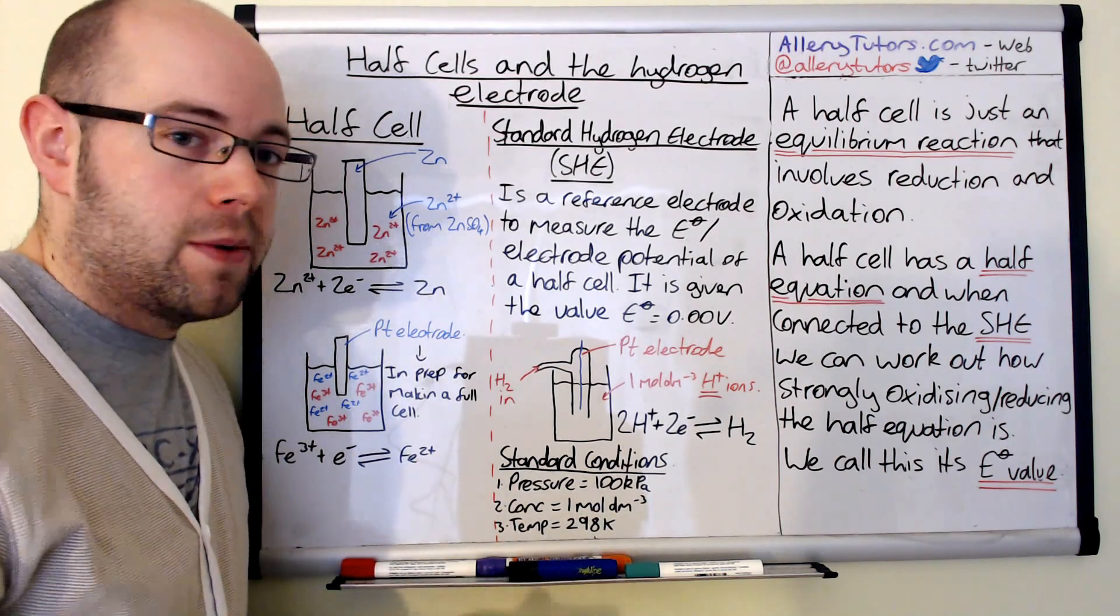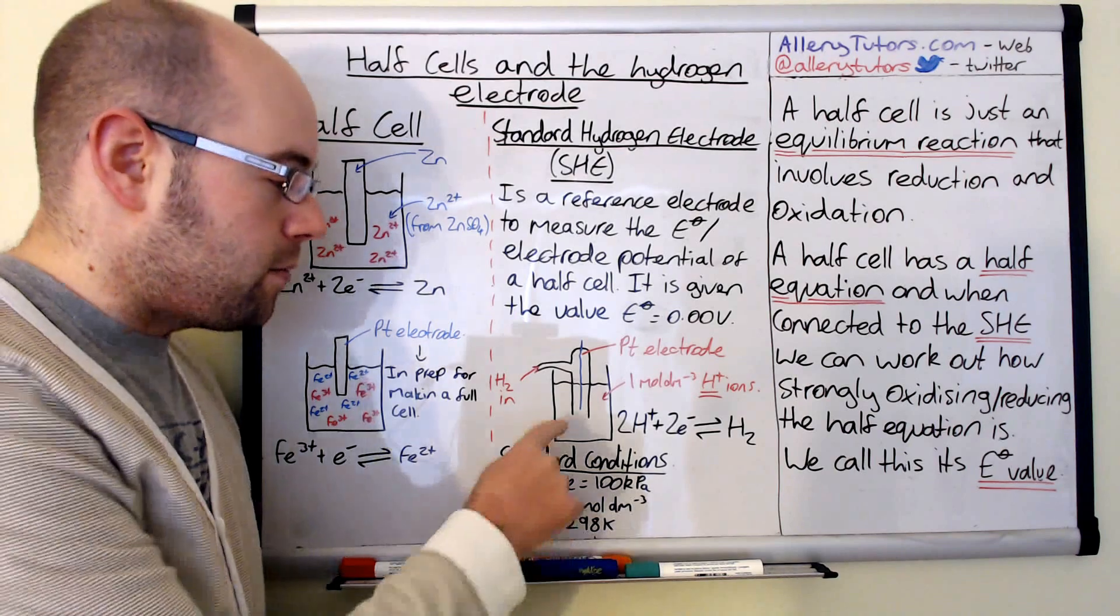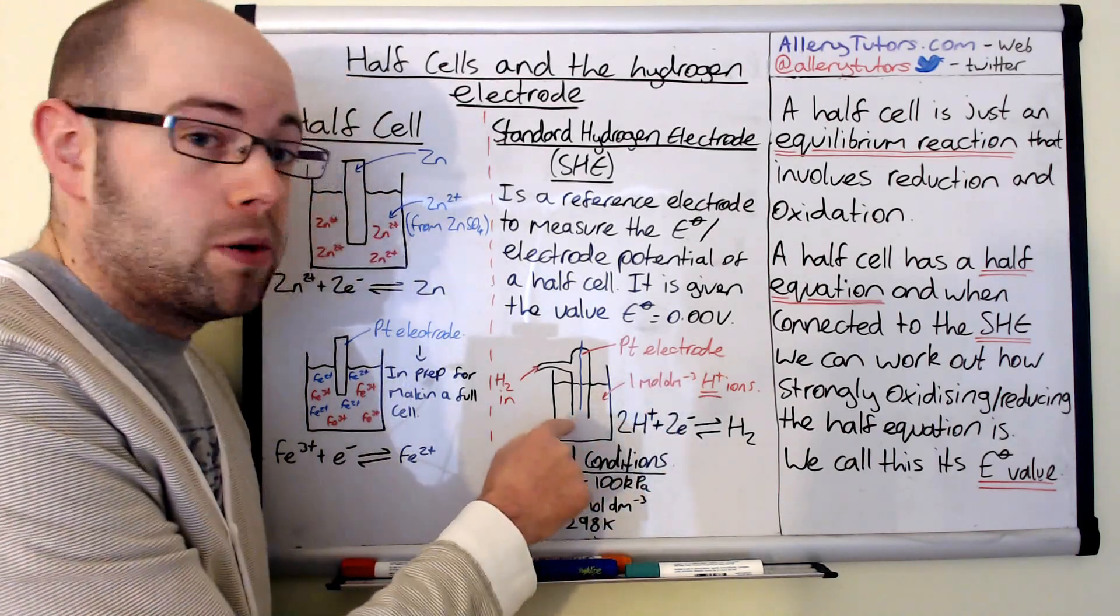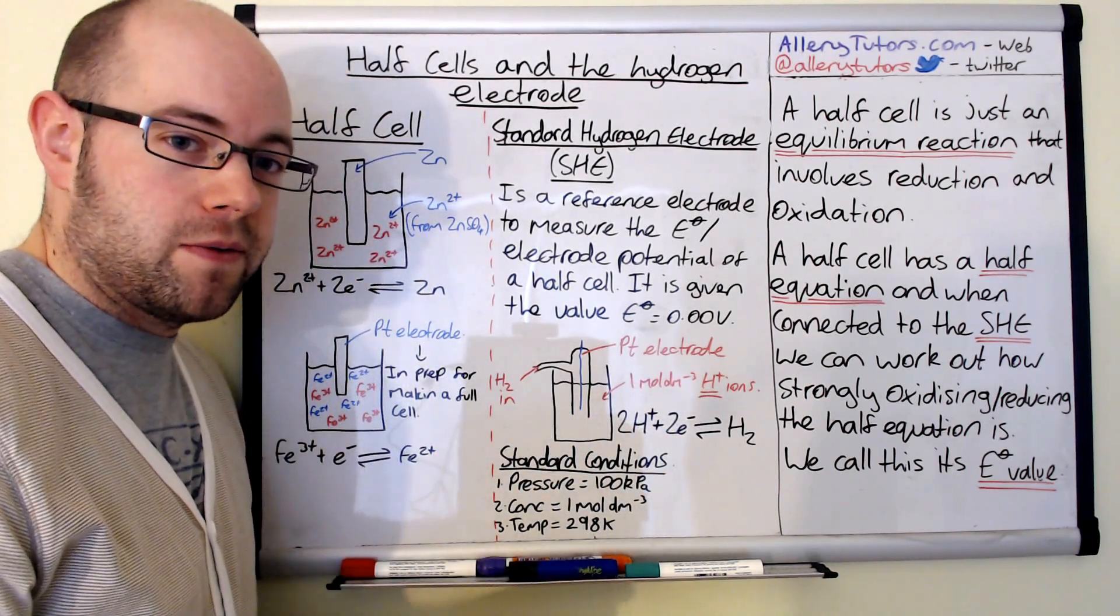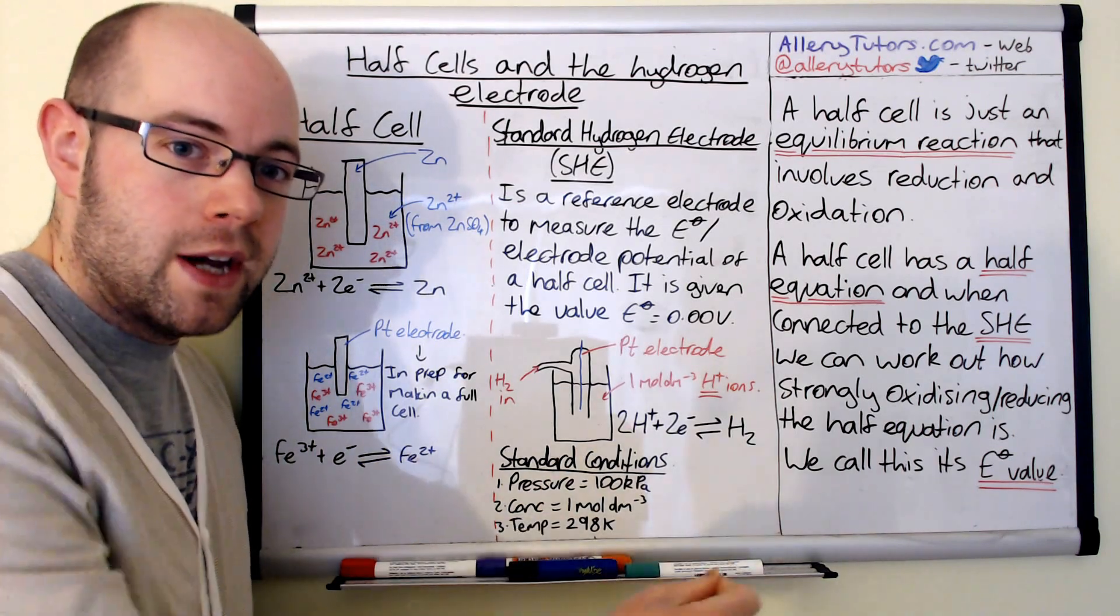But if we're going to use an acid like sulfuric acid, H2SO4, which is diprotic, then we've got to use half molar for that, because each molecule of H2SO4 will effectively give up two H+ ions.